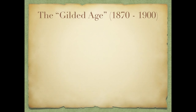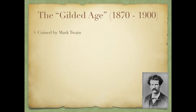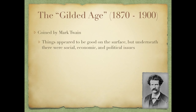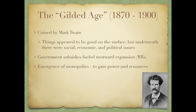Alright, let's begin. Starting off talking about the Gilded Age — this term appears multiple times in the new curriculum. It was coined by Mark Twain, and it means that things appeared to be good on the surface when you looked at the United States socially, economically, and politically, but underneath there were social, economic, and political issues. It appeared as if everything was good, but once you dug a little deeper, you would see there were issues.